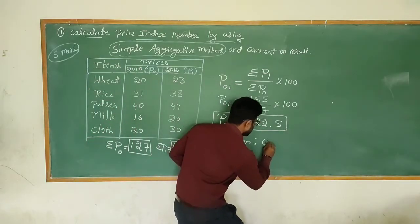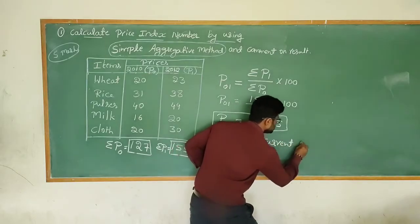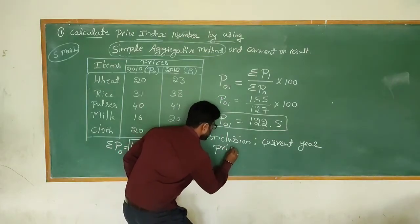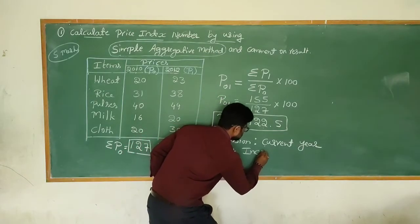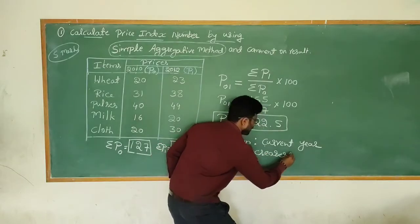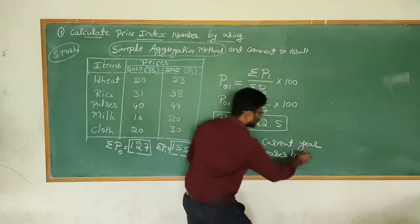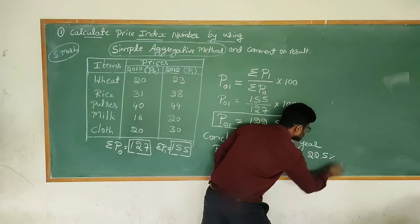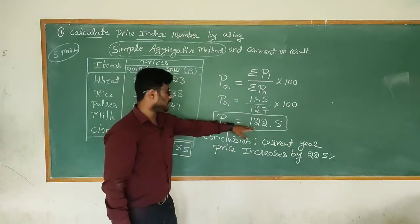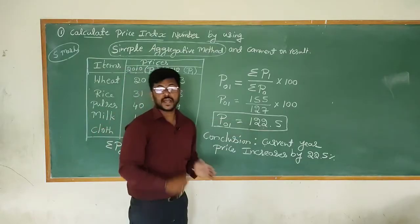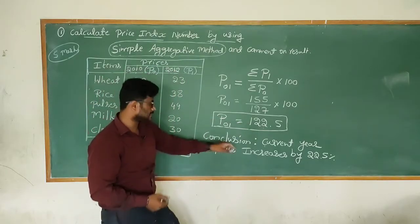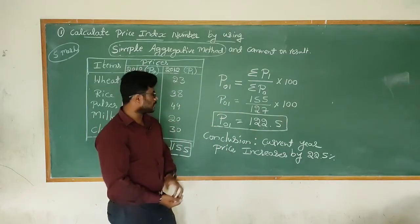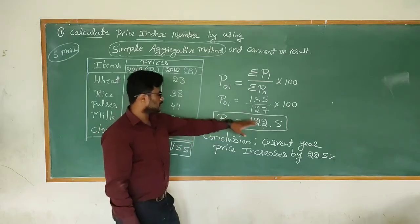Our conclusion: the current year price has increased by 22.5%. Since the base is 100 and our result is 122.5, the difference is 22.5, which represents a 22.5% increase in prices from the base year to the current year.